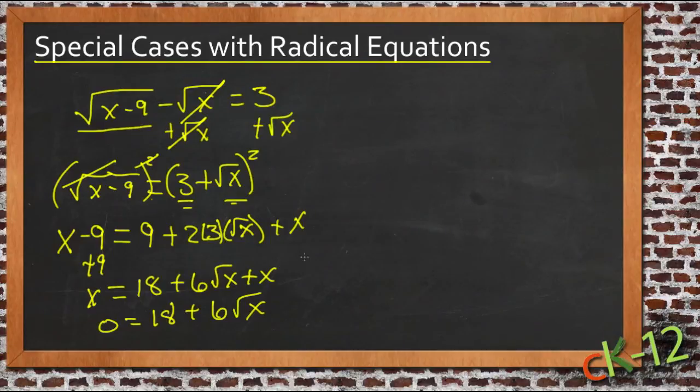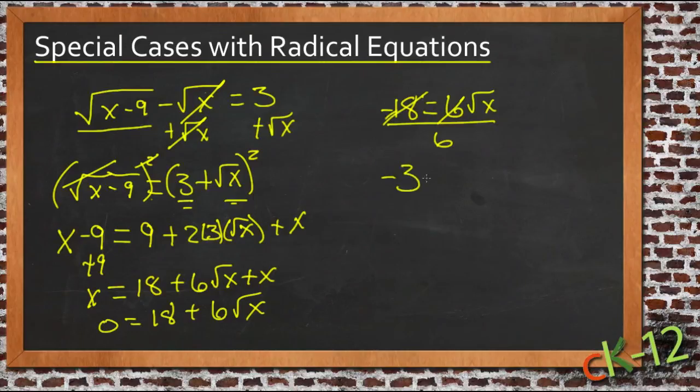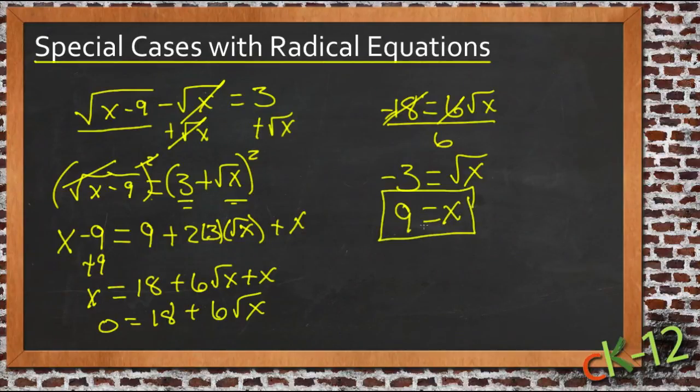Move the 18 to the other side, so we'll have negative 18 equals 6 roots of x. Divide both sides by 6, that'll cancel. Negative 18 divided by 6 is negative 3, negative 3 equals the square root of x. And we'll square both sides, and we'll get negative 3 squared is 9, 9 equals x. So we come up with x is equal to 9.